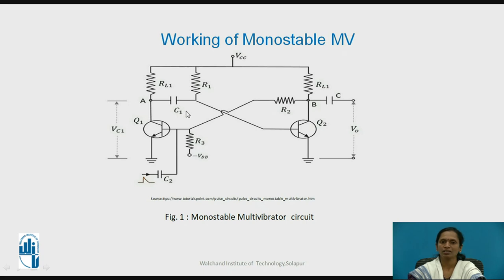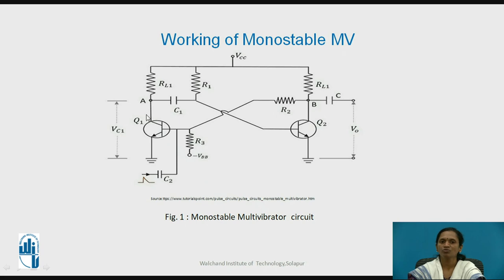Both AC and DC coupling are provided in this circuit. Assume VCC is connected — that is, switch on — and VBB is also connected through resistor R3 to the base of Q1. At the base of Q1, you have a negative voltage. As you know, this is an NPN transistor. So at the base you have negative voltage, and that is why the transistor will be in the cutoff region. When it is in the cutoff region, it will be off, and when the transistor is off, it will be disconnected from VCC and ground. Therefore, you will obtain the voltage VCC across this transistor — that is, open circuit condition — and the collector voltage will rise.